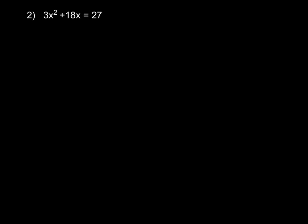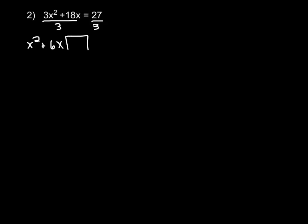Now in number 2, you'll notice two things are different. First of all, the number is already on the right-hand side of the equation for us, so we don't have to move that. But the second thing is, now we have a number other than 1 in front of our x squared. And when that happens, we need to divide our entire equation by whatever that number is. You always want to get it so your coefficient in front of the x squared is a 1. So I'm going to divide both sides of the equation by 3. When I do that, 3x squared divided by 3 is x squared, and 18x divided by 3 is 6x. I'm going to put my box right now, and then 27 divided by 3 is 9, and I'm going to put a box over here.